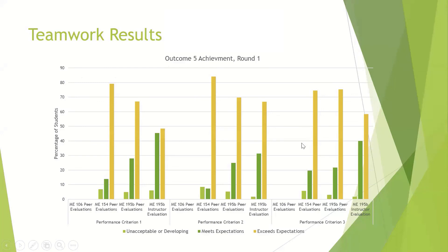This is the kind of results we got for teamwork — we're still waiting on results for one class. The light green is basically poor, the dark green is okay, and the gold means they're doing great. One interesting and not surprising thing: if you look at performance criterion one — and this is similar for all of them — the instructors had a lower view of students' performance than the students themselves did about each other. But this is the kind of results we can get. You can look and see where the weak points are, where we have the most students with poor results, and then work on that particular element.